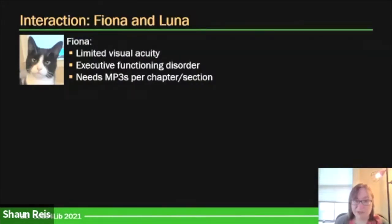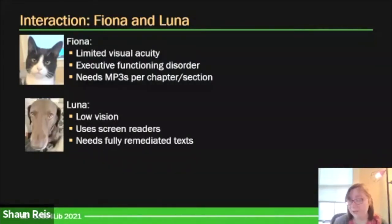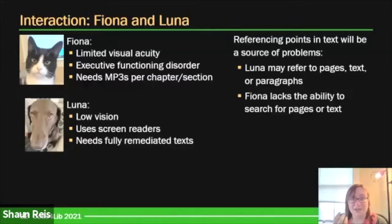Let's go back to Fiona — she has limited vision and listens to audiobooks to help with her organizational issues. Fiona is going to be working with Luna, a cute brown hound dog with puppy-dog eyes. Luna also has low vision, but uses a screen reader and thus requires a fully remediated electronic version of the text, such as a PDF or EPUB 3. Where they'll start running into problems is that Luna can refer to specific pages, sentences, paragraphs, and columns — but Fiona is listening to just the audio version without access to the source text. Their collaboration is going to be muddled because of that.